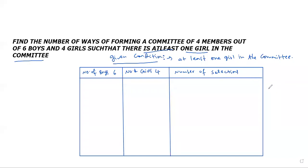The condition is at least one girl in the committee. Coming to the question, the condition here is at least one girl in the committee. 'At least' means greater than or equal to one, so at least one girl means we start with one girl.